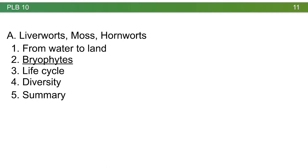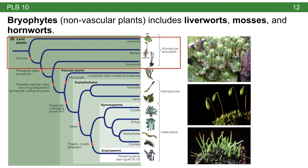If we zoom in on land plant phylogeny, you can see the liverworts, mosses, and hornworts towards the base of the tree. This doesn't mean they're somehow primitive plants — they're all living at the same time as other plants today, but they diverged earlier in the evolution of land plants. They all look very different from one another, and even though they're small and obscure, their morphology and biology easily separate them from each other. Bryophytes are often referred to as the non-vascular plants because they lack xylem, and include liverworts, mosses, and hornworts.